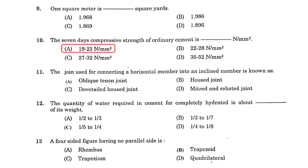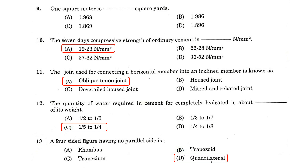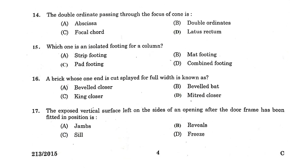The joint used for connecting a horizontal member into an inclined member is known as an oblique tenon joint. The quantity of water required in cement for complete hydration is about 1/5 to 1/4 of its weight. A four-sided figure having no parallel sides is known as a quadrilateral. The double ordinate passing through the focus of a conic is the latus rectum.